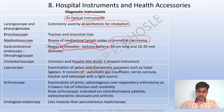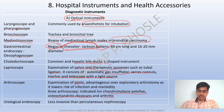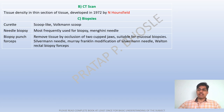The laparoscope consists of an automatic gas insufflator, various cannulas, a trocar, telescope with a light source. Orthoscopes are used for examination of joints — in the knee, orthoscopes are indicated in chondromalacia patella, osteochondritis dissecans, and arthritis. Urological endoscopy is less invasive than percutaneous nephroscopy. CT scan measures tissue density in thin sections and was developed by Hounsfield and Cormack.